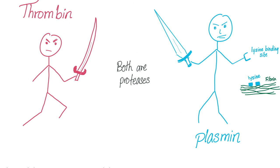To understand fibrin lysis properly, think of thrombin and plasmin as enemies — but we should all love each other. The lawyer and the accountant both hate each other, but they are both necessary for the corporation. The professor and the administrator hate each other's guts, but they are both essential for a university to function. It's just the way it is.